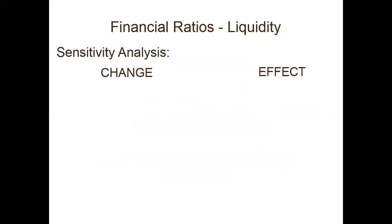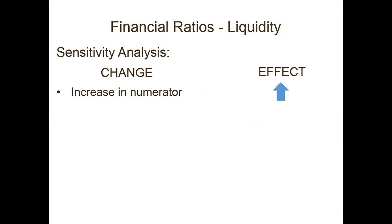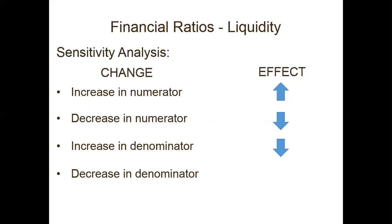Let's do some sensitivity analysis — if there is a change, what will be the effect on the ratios? An increase in the numerator always causes an increase in the ratio — they are directly correlated. A decrease in the numerator causes a decrease in the ratio. An increase in the denominator causes a decrease in the ratio — this is inverse. A decrease in the denominator causes an increase in the ratio. Please take a screenshot of this for easy reference when answering multiple choice theory questions.